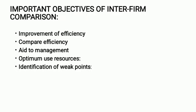The important objectives of Interfirm Comparison are as follows. The first objective is to improve efficiency. The main purpose of Interfirm Comparison is improvement of efficiency by showing the management of a participating firm its present achievements and possible weaknesses. The second objective is to compare efficiency — Interfirm Comparison analyzes the cost of different firms with a view to spot out relative efficiency. The third objective is aid to management.